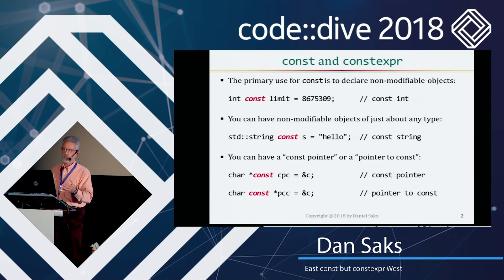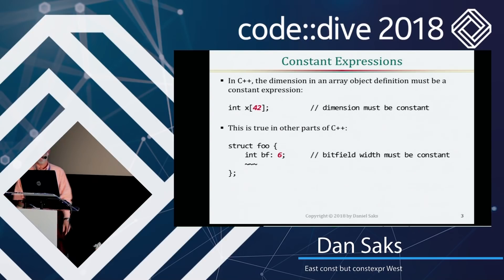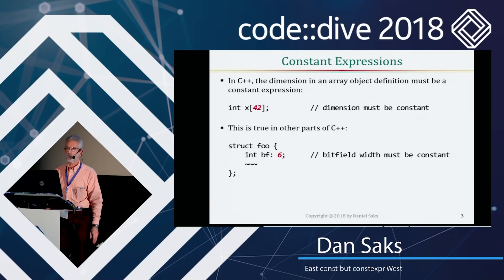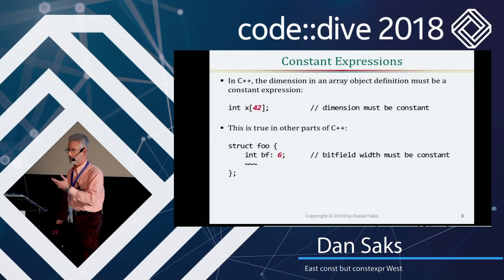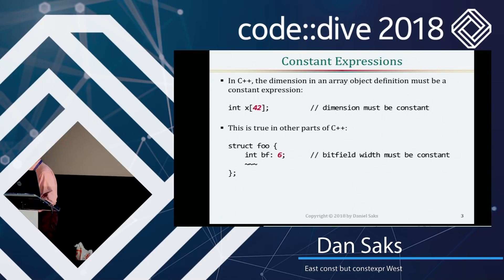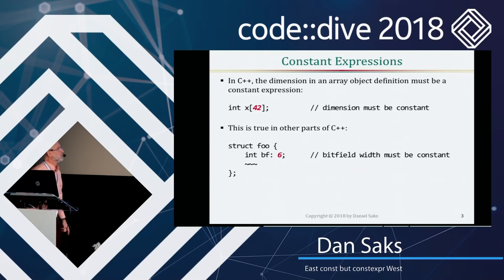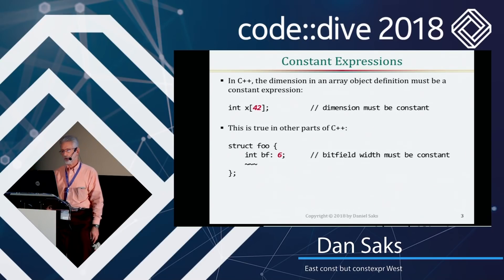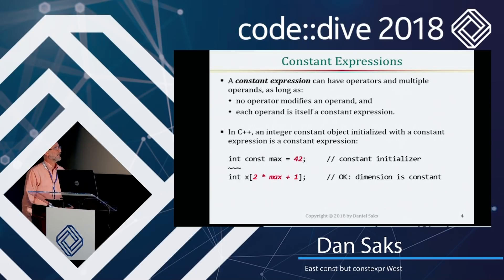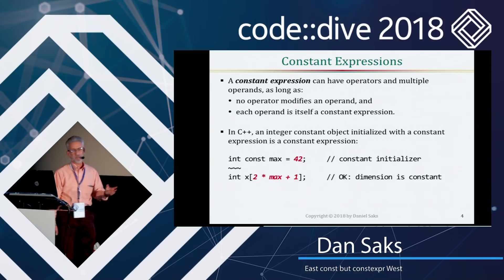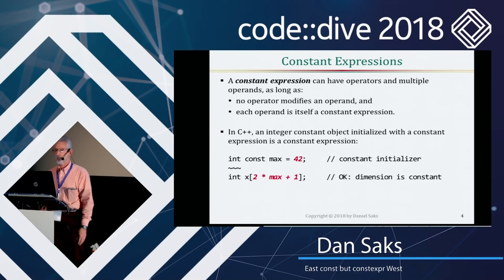You can have constant pointers, pointers to const. In C++, there's a concept — as there is in C — of something called a constant expression. There are various contexts in the language where the value being evaluated has to be known at compile time. For example, an array dimension: inside the square brackets, whatever that is, has to be a value known or computable at compile time. The same thing is true when you specify a bit field — that struct foo has a bit field whose width is six, and that has to be a constant value. The generalized concept of a constant expression is that it can have multiple operands and operators, as long as the whole thing can be evaluated to a single value at compile time.